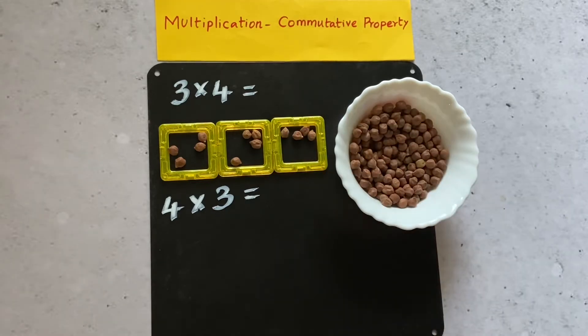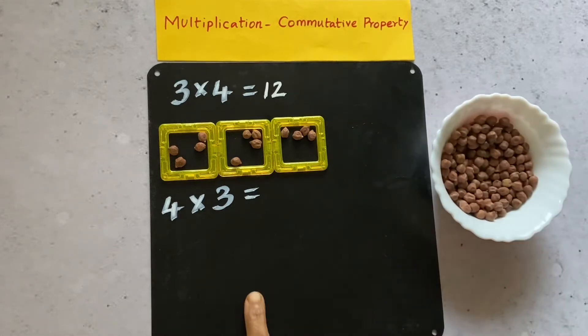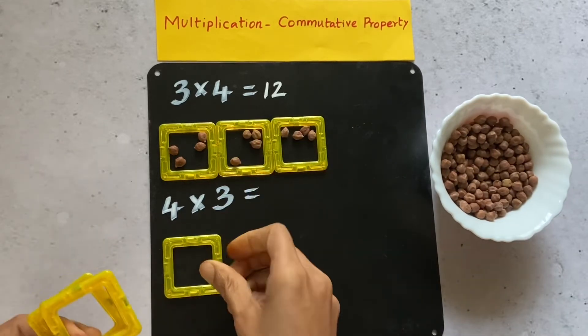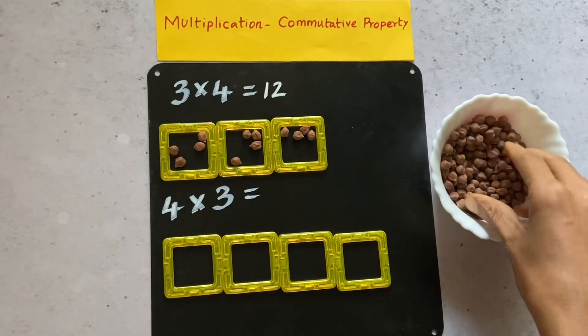Write the answer, which is 12. Now for four times three is four groups of three.